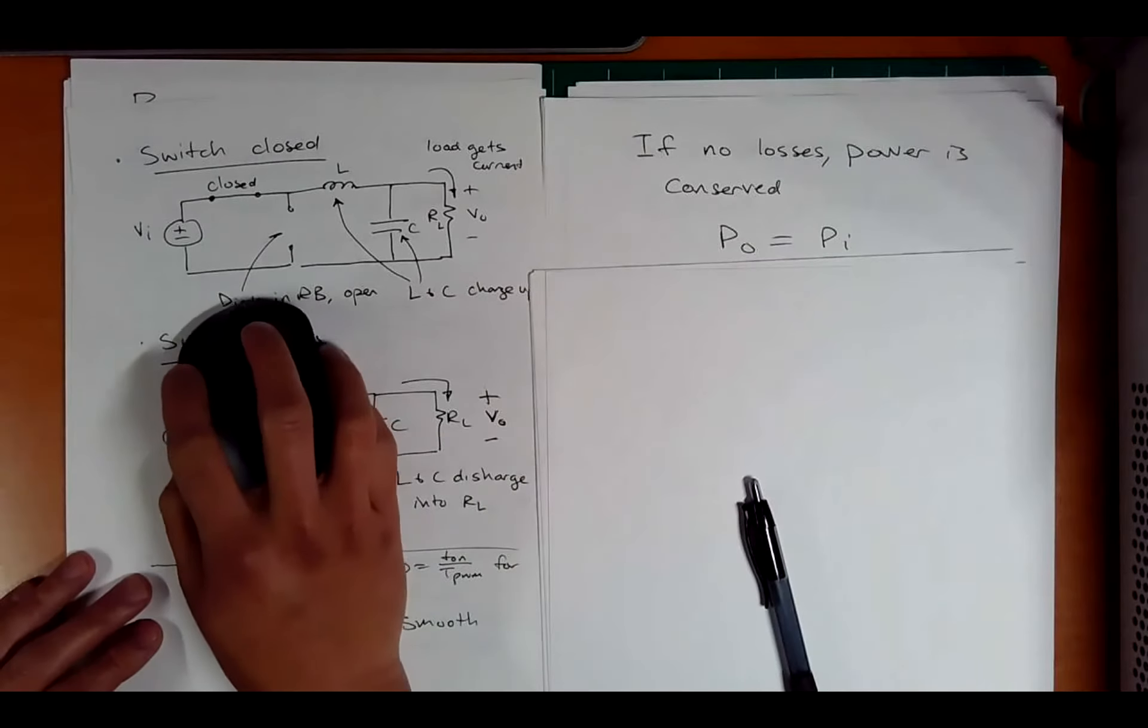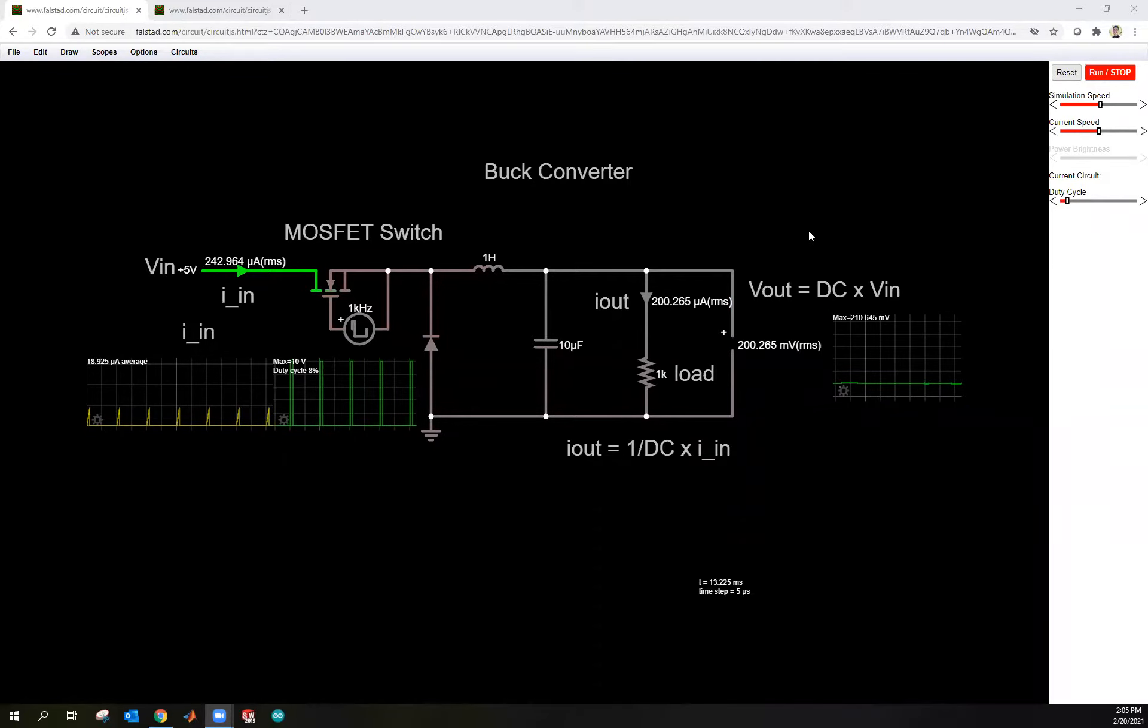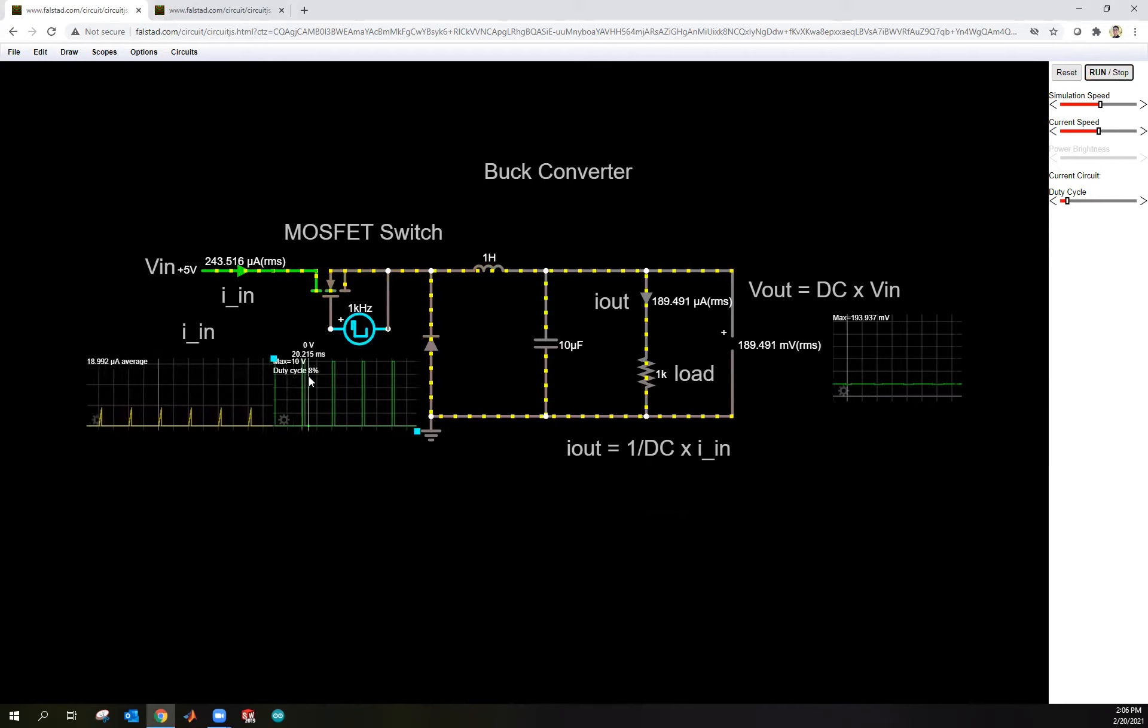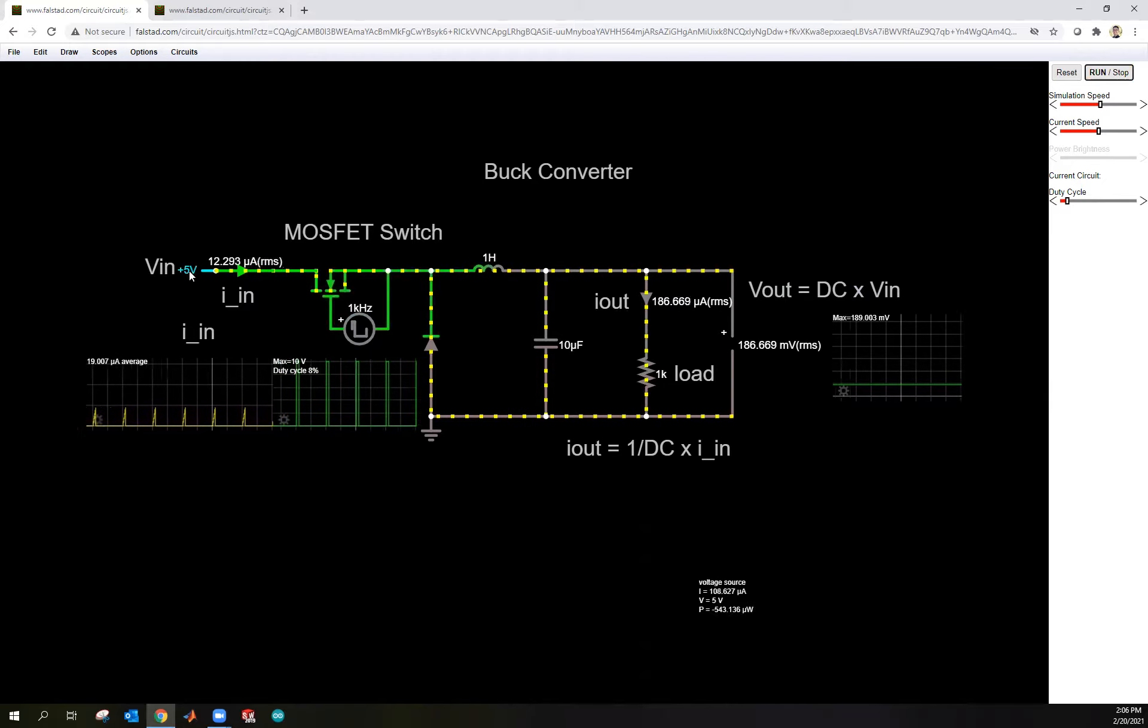So let's switch over the simulation and see the behavior. You can go here. And the links, as always, whenever I show these simulations, check out the description so that you can click on it and play with these parameters. If we look at the simulation, we have the output voltage. Here's a load. We have a capacitor, an inductor, and a diode here. And then we have this MOSFET switch, and we have the constant fixed 5 volts. So the output voltage is the duty cycle times the input. And the output current is 1 over the duty cycle times the input. So I'm going to run this.